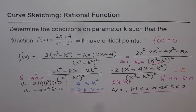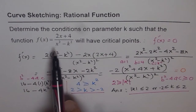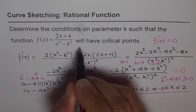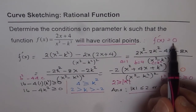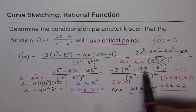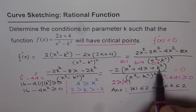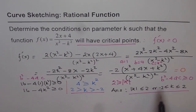Let's go through it once more. The question was: determine conditions on parameter k such that f(x) = (2x + 4)/(x² - k²) will have a critical point. Having a critical point means f'(x) = 0. We found the derivative, and f'(x) = 0 requires the numerator to be 0. The numerator is a quadratic, which has real roots only if b² - 4ac ≥ 0 — leading to the conclusion that k must be between -2 and +2.